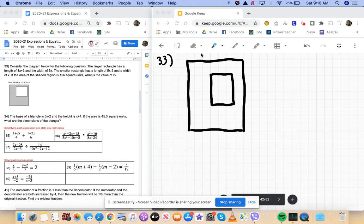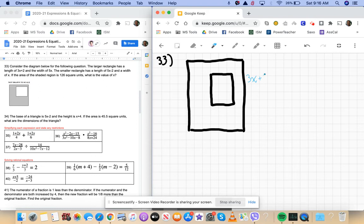Alright, number 33. It tells us that the larger rectangle has a length of 3x plus 2, so I'm going to label that 3x plus 2, and has a width of 5x. So I'll put that up here.